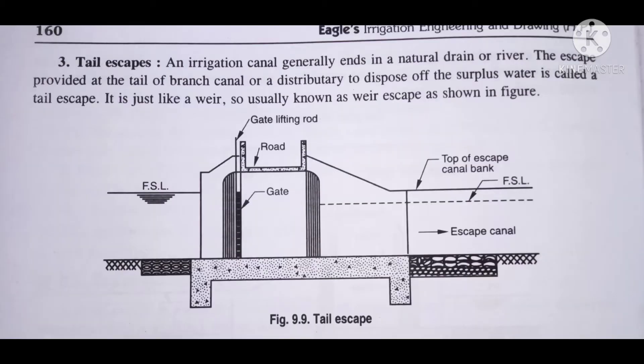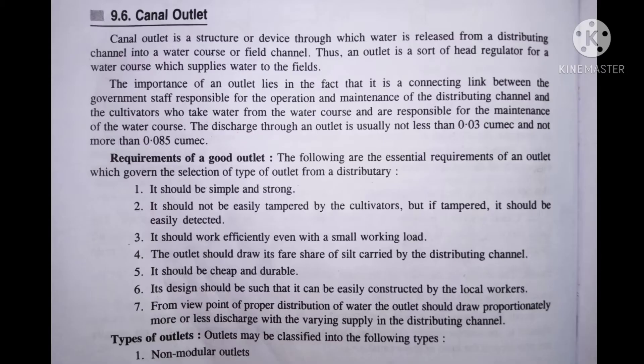Now next type is tail escape. Is mein hum canal ke ek taraf tail escape ka structure banayenge. Is se hum extra paani ko natural drain mein transfer karenge. Jaisa ki aapko diagram mein bhi show ho raha hai, canal ke ek taraf hum ne ye structure banaya hai, taaki jo extra paani hai usko hum drain out kar pahunchayenge natural drain mein.